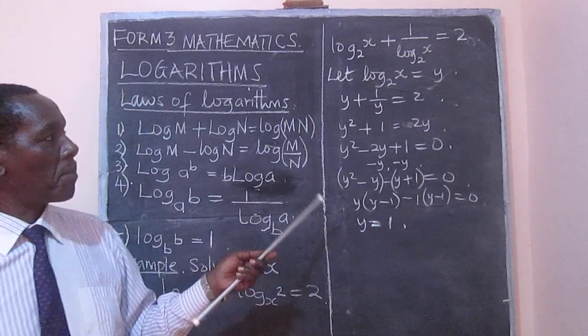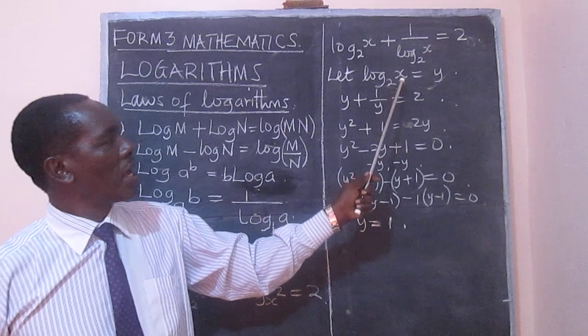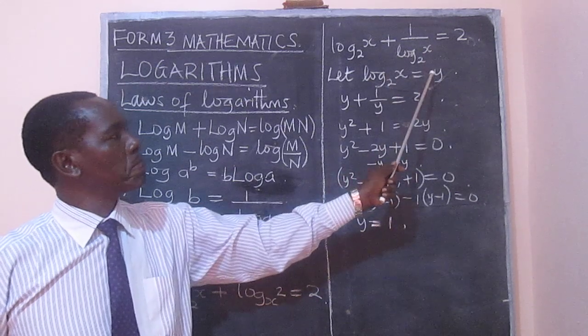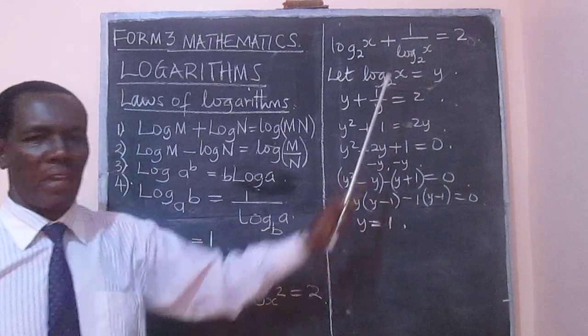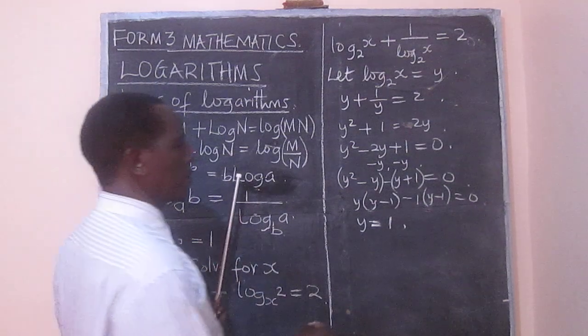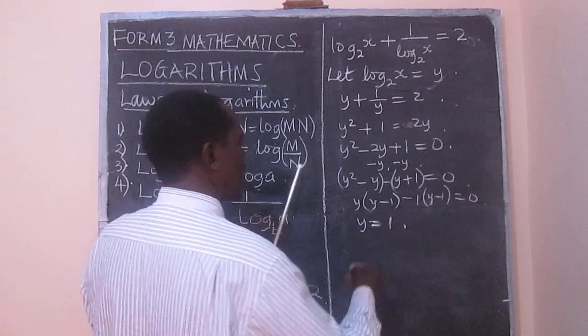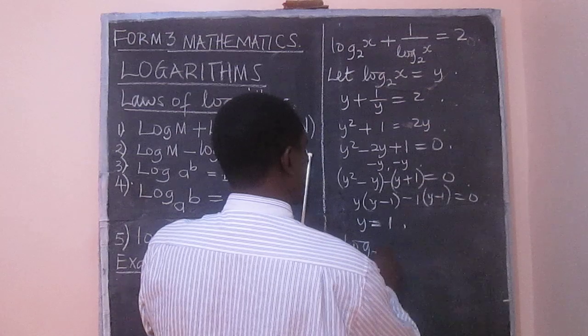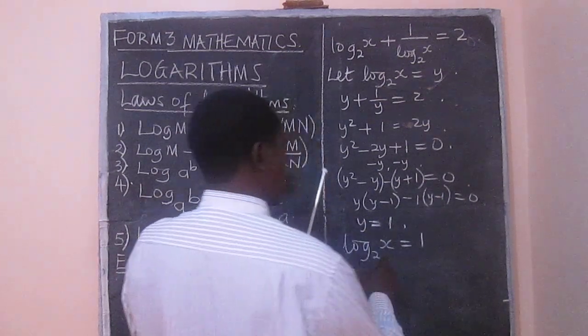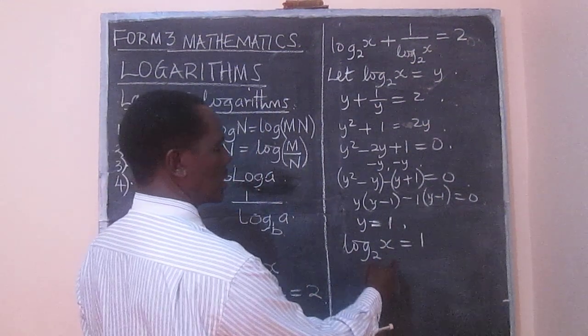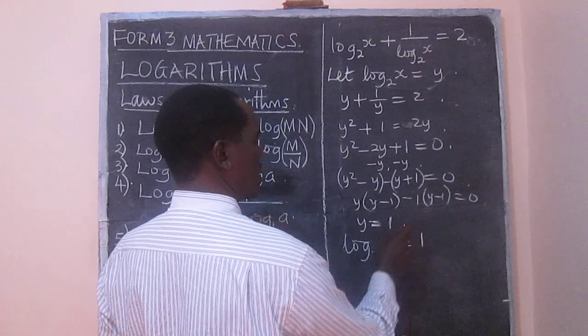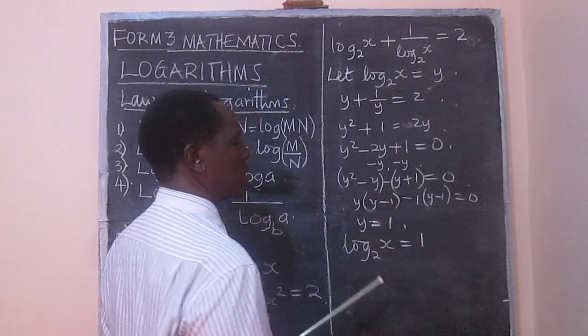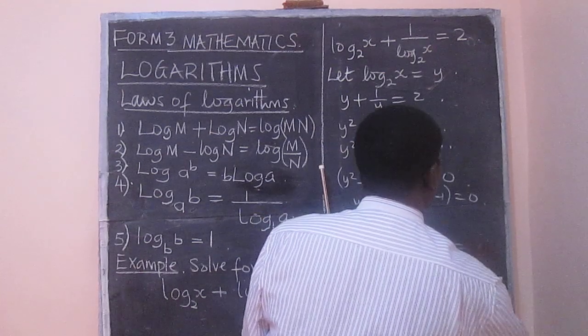But here, we need to remember what y was. And y was actually log to base 2 of x. And therefore, we can say log to base 2 of x equals 1. And here, we can see clearly that 2 raised to 1 is equal to x. So, x is equal to 2.